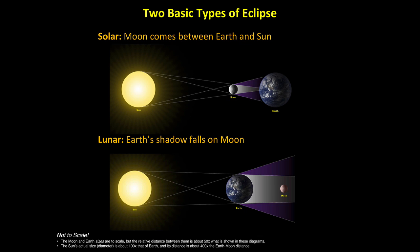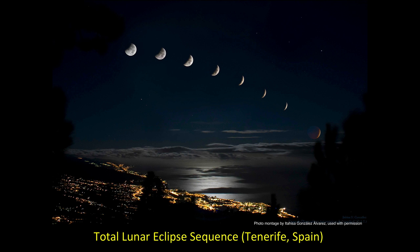The second basic type of eclipse is a lunar eclipse, in which Earth comes between the Moon and the Sun, so that Earth's shadow falls on the Moon. This series of photos shows Earth's shadow gradually covering more and more of the Moon during a total lunar eclipse, with totality at the far right. Notice that Earth's shadow is clearly curved, a fact that enabled ancient scholars, including Aristotle, to recognize that our world is round nearly 2,000 years before Columbus ever set sail. Also notice that the Moon takes on a red tinge during totality, created by the reflected glow of all the sunrises and sunsets that ring our planet at that time.